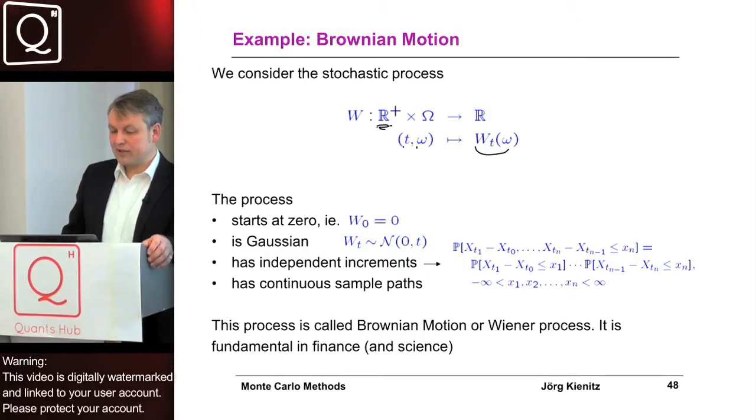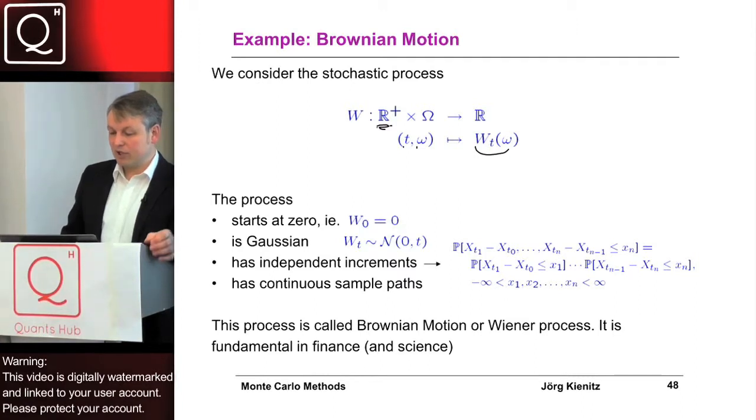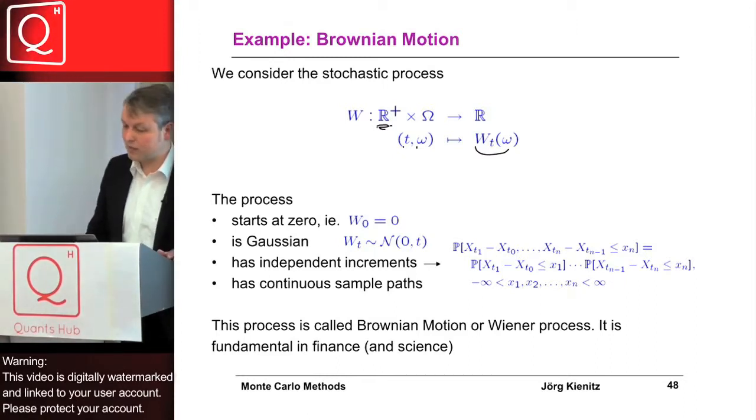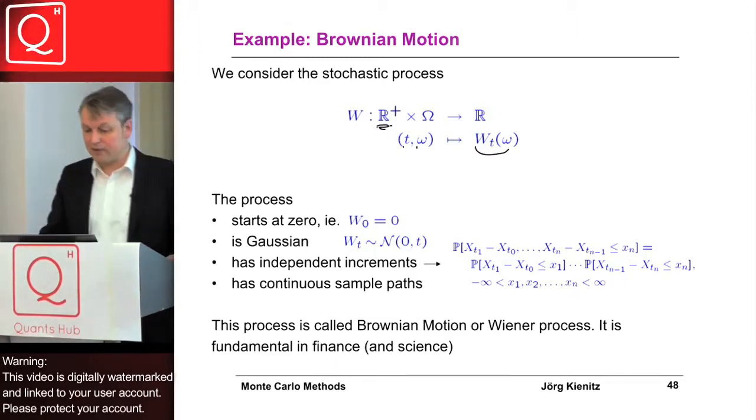If we fix a certain point T in time, we assign a certain distribution to this random variable, a random mechanism. We have to specify a random mechanism whenever we work with stochastic quantities.